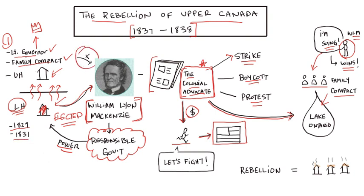After some time, the Family Compact — or the Tories, the broader group — didn't like what he was saying and tried to have him ousted. They did have him kicked out of the lower house from time to time.